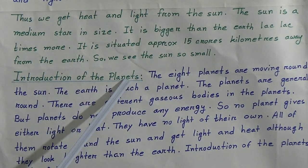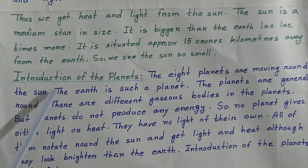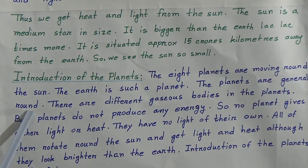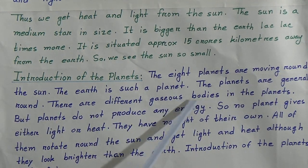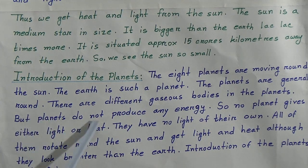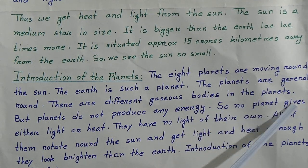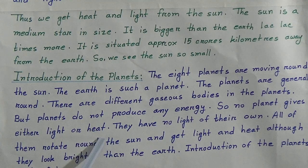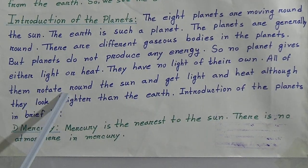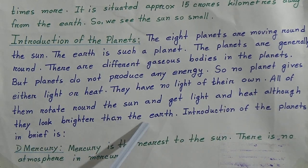Next is the introduction of the planets. The 8 planets are moving round the sun; the earth is such a planet. The planets are generally round and have different gaseous bodies. But planets do not produce any energy like the sun, so no planet gives either light or heat. All of them rotate round the sun and get light and heat, although they look brighter than the stars.